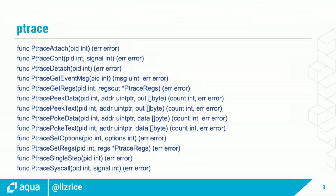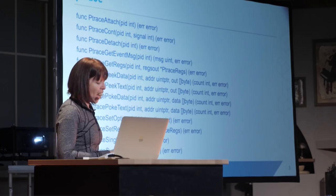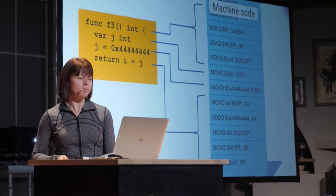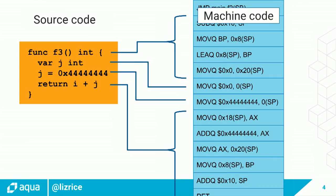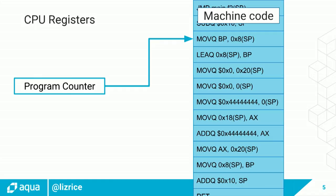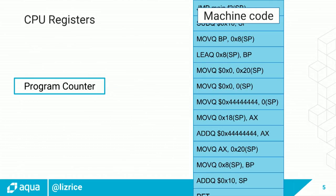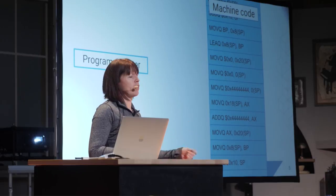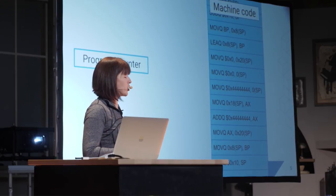How many of you have used a debugger? Most of you, right? So today we're going to figure out how they work under the covers. In order to do that, we need to have a little talk about how your Go source code relates to machine code. Every line in your source code gets translated during compilation into some number of machine code instructions. When your binary is running, there's a CPU register called the program counter that points at the next instruction that's going to get run. Normally that's just incrementing along, moving to the next instruction as we go. If you were going to call a new function, it would go to wherever in memory the first instruction from that new function happens to be.